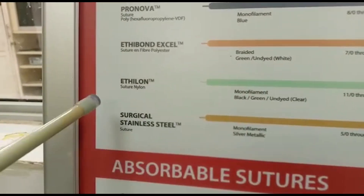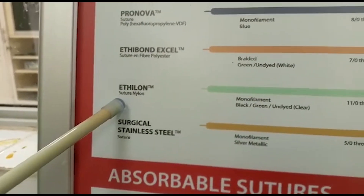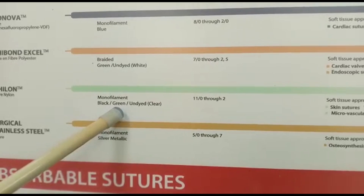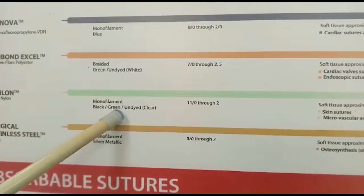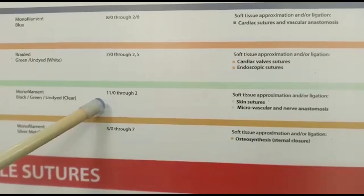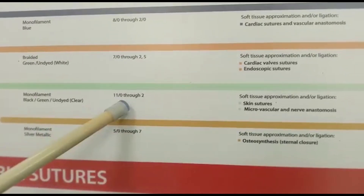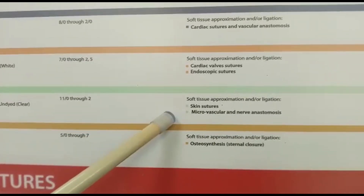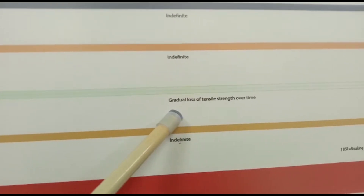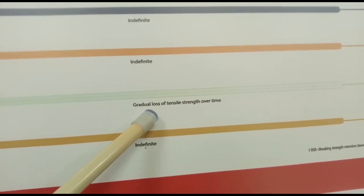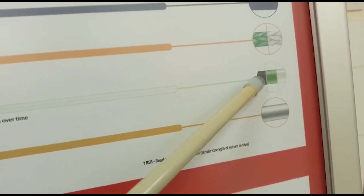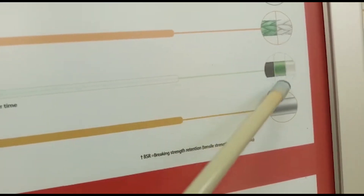Other non-absorbable sutures include nylon. Nylon suture is a monofilament suture, meaning a single strand that is not woven. They come in different colors — black, green, and clear — and different sizes from 11-0 through 2. They are used in skin closure and microvascular surgeries. Some nylon sutures gradually fade in color over time.